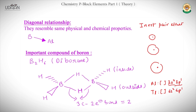In Aluminium, both the 3s² and 3p¹ electrons can be easily removed because the s and p orbitals are not very far from the nucleus — the size of the aluminium atom is small. But the Thallium atom is much bigger. In Thallium, the 6s² electrons are very close to the nucleus while the 6p¹ electrons are far. So it is easy to remove the p electron from Thallium, but very hard to remove the 6s² electrons.